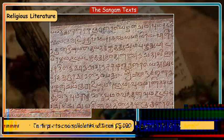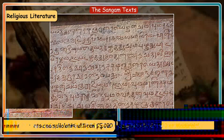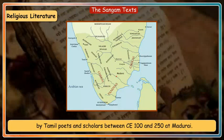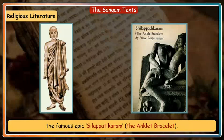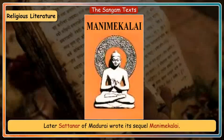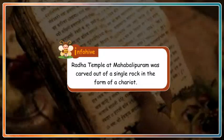The Sangam texts are a compilation of Tamil poems by Tamil poets and scholars between CE 100 and 250 at Madurai. Poet Ilango Adigal, who was a Chera prince, wrote the famous epic Silappatikaram, the Anklet Bracelet. Later, Sattanar of Madurai wrote its sequel, Manimekalai.